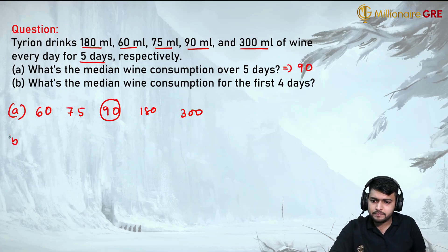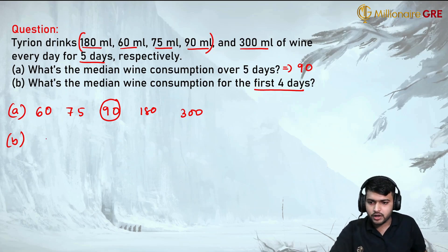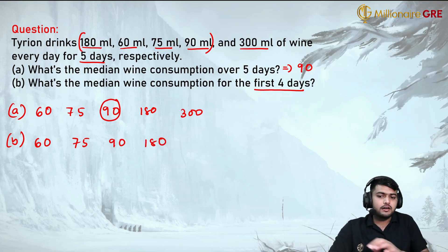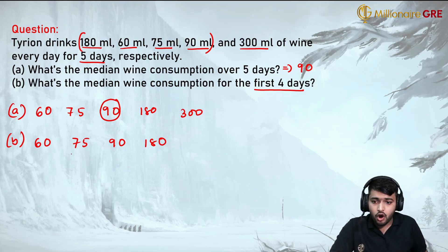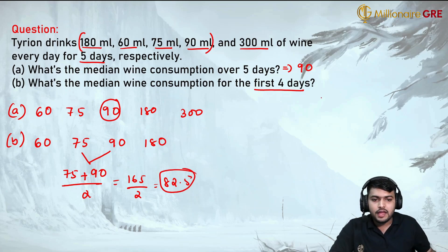For Part B: what is the median wine consumption for the first 4 days? The wine amounts for the first 4 days are 180, 60, 75, and 90. Arranged in ascending order: 60, 75, 90, 180. Since the number of terms is even, we take the average of the two middle terms, 75 and 90. That gives 165 divided by 2, which is 82.5. So the answer for Part B is 82.5.